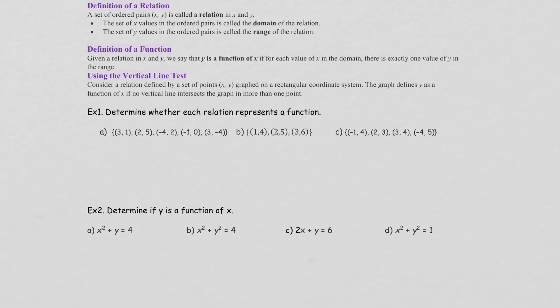If you don't know what domain and range are, here is the definition. Given an ordered pair, the first element of the ordered pair is called the domain, which we refer to as x. The range is the second element of the set, so y is going to be the range. We are also going to use the vertical line test to determine if a given graph is a function or not.